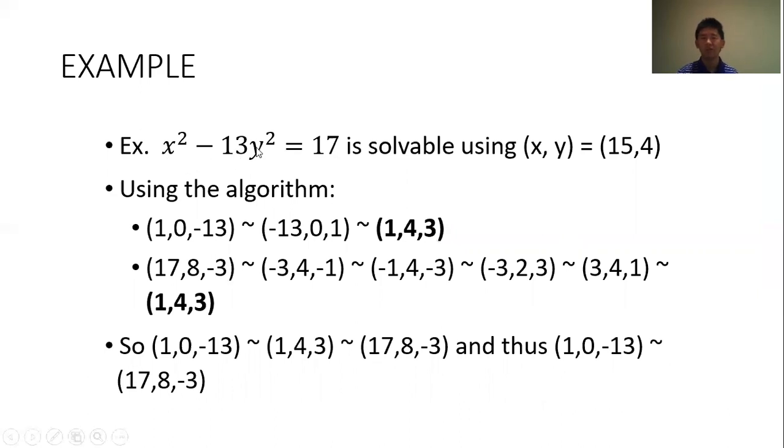So here's a quick example. I have the equation x squared minus 13y squared equals 17. And it is solvable. I found a solution right here. And so an example of how the algorithm works. First, you take the form 1, 0, negative D here, and you cycle until it is reduced. This form right here satisfies the reduction conditions. And then you take a form that begins with 17 and then satisfies the determinant. And you reduce it until this form here, which satisfies the reduced conditions. And then you continue cycling until you find a form here that is the reduced version of this form. And since these two forms are both equivalent to each other, this equation is solvable as indicated by the solution right here.